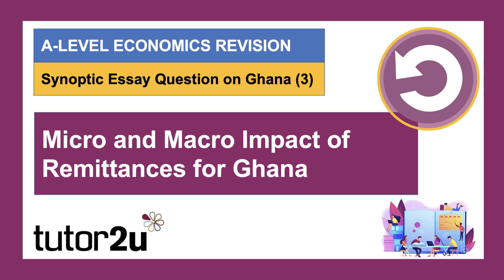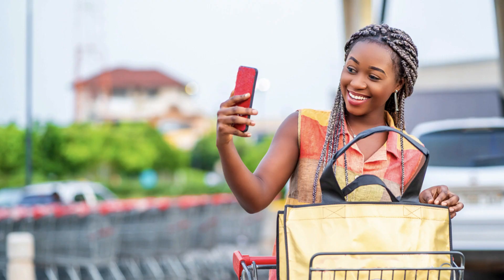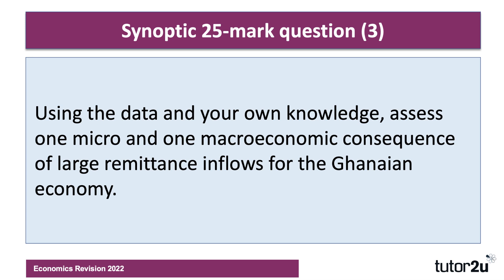We have reached the fourth in our series of videos looking at Ghana as a little development case study and thinking about three synoptic essay questions related to the extracts. This video will look at the micro and macro consequences of remittances for the Ghanaian economy. The question we're going to look at is: using the data and your own knowledge, assess one micro and one macro economic consequence of large remittance inflows for the Ghanaian economy.